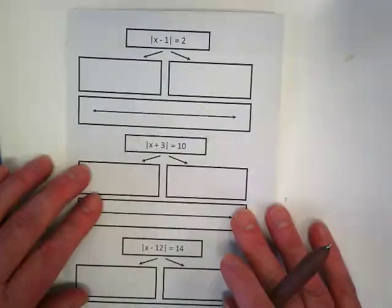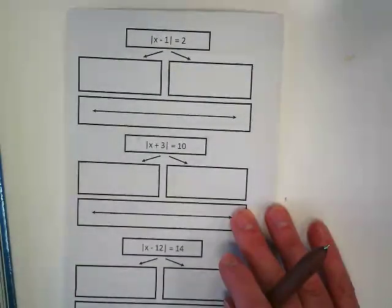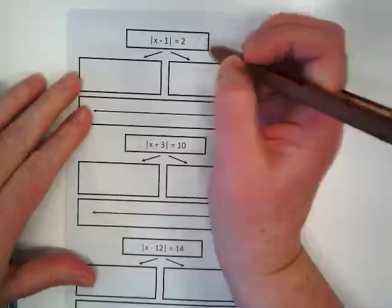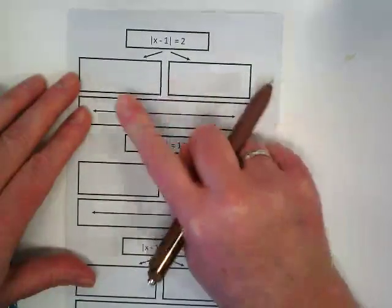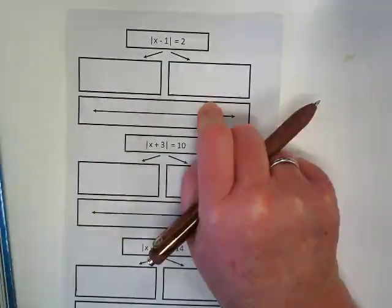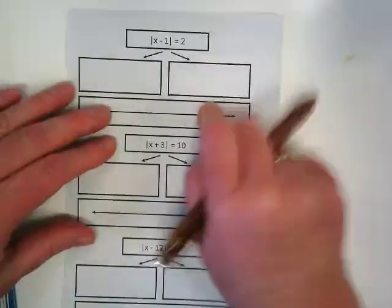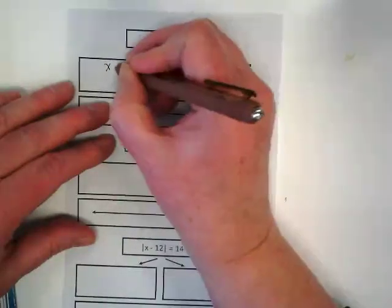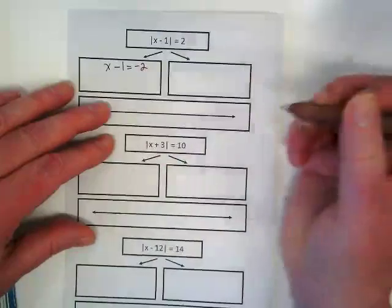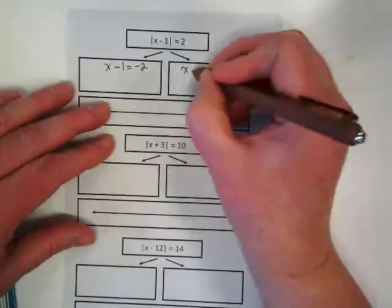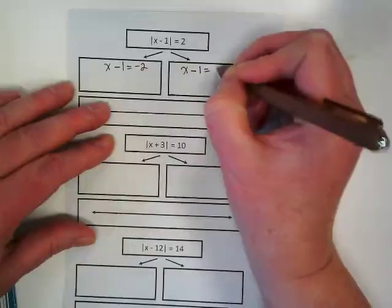Okay, these are a little bit different. The absolute value is still already isolated, but what's different about it is that the X is not isolated inside the absolute value. So we did a couple like this yesterday. Let's just show it. Notice the boxes are bigger because once we've taken and made our negative version and our positive version, we're going to have a little bit more work to do. X minus 1 is equal to negative 2. X minus 1 is equal to positive 2.